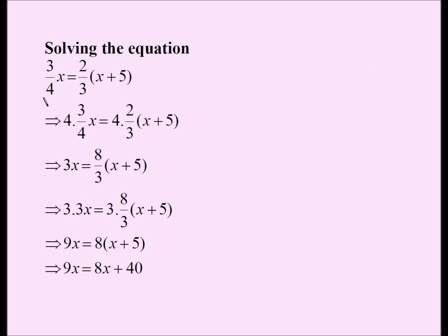This is my equation from the previous slide. There are multiple ways you can solve this equation. I'm going to show all the steps and do it in a certain way. I don't like fractions, so I multiply both sides by four. On the left-hand side I only have 3x. On the right-hand side I have 4 times 2 is 8, 8 over 3 times x plus 5.